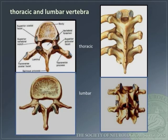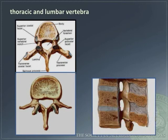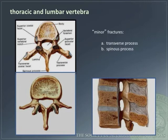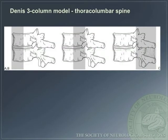The thoracic and lumbar vertebrae each have unique anatomy as illustrated in these images. In these regions, minor fractures may involve the transverse process, spinous process, minimal compression fractures, and end plate fractures. Conceptually, it is important to understand the Dennis three-column model of the thoracolumbar spine.